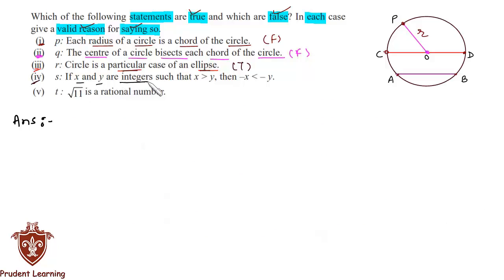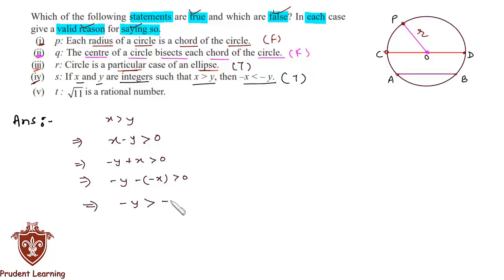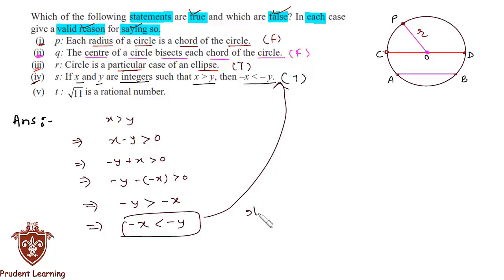The fourth statement: if x and y are integers such that x is greater than y, then minus x is less than minus y. This statement is true. Since x > y, we can write x − y > 0, which can be rewritten as −y + x > 0, and then as −y > −x, which simply means −x < −y. This is what we were required to prove, hence the statement is true.